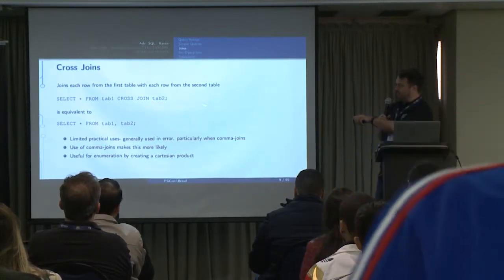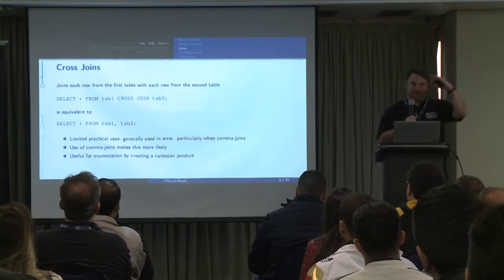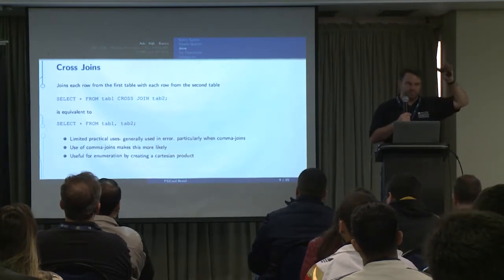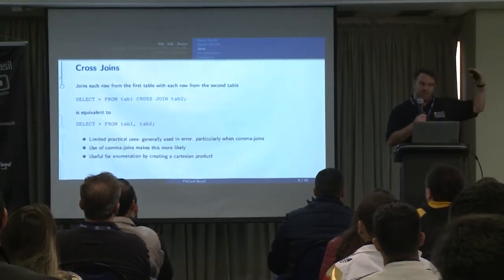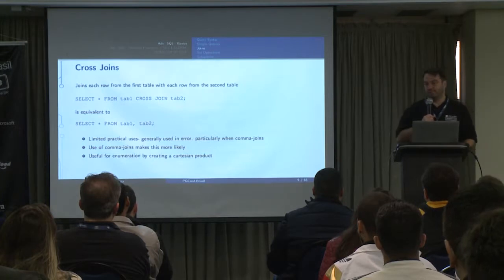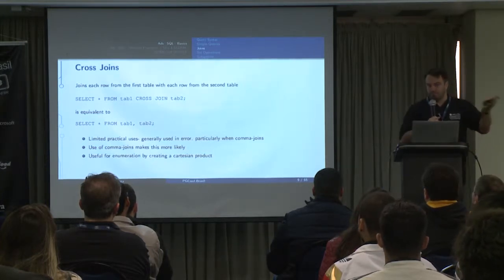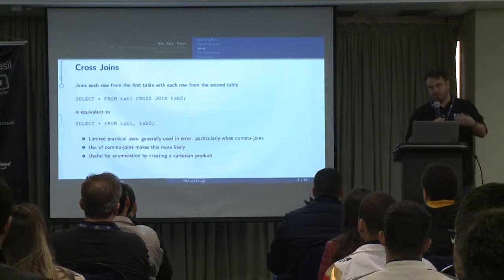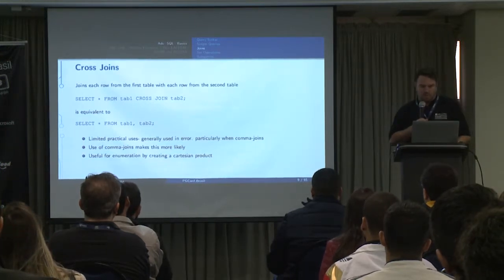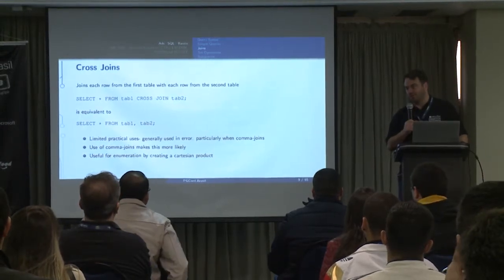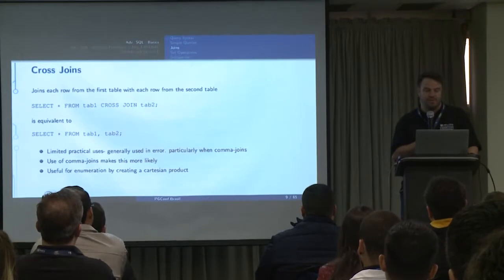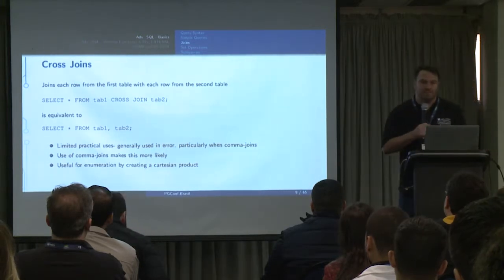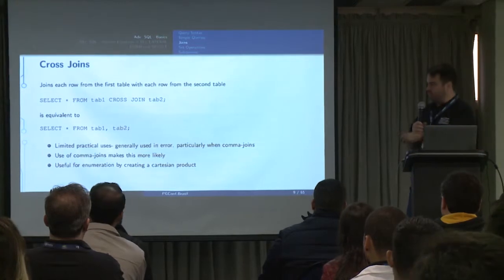One fun use case is to have a VALUES clause as a subselect on the right, and then some table you're joining against on the left, and you do a cross join to enumerate rows for every combination of those sets — days of the week, for example. You take days of the week, put them into a VALUES construct, cross join those two together. Be careful though: you can unintentionally get cross joins if you don't have appropriate conditionals, leading to a Cartesian product.